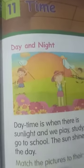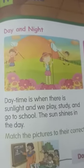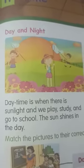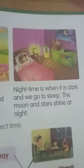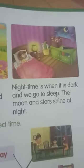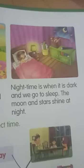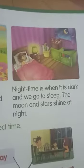T-I-M-E time. What is daytime? Daytime is when there is sunlight and we play, study and we go to school. The sun shines in the day. What is the night time? Night time is when it is dark. We go to sleep. The moon and stars shine at night.